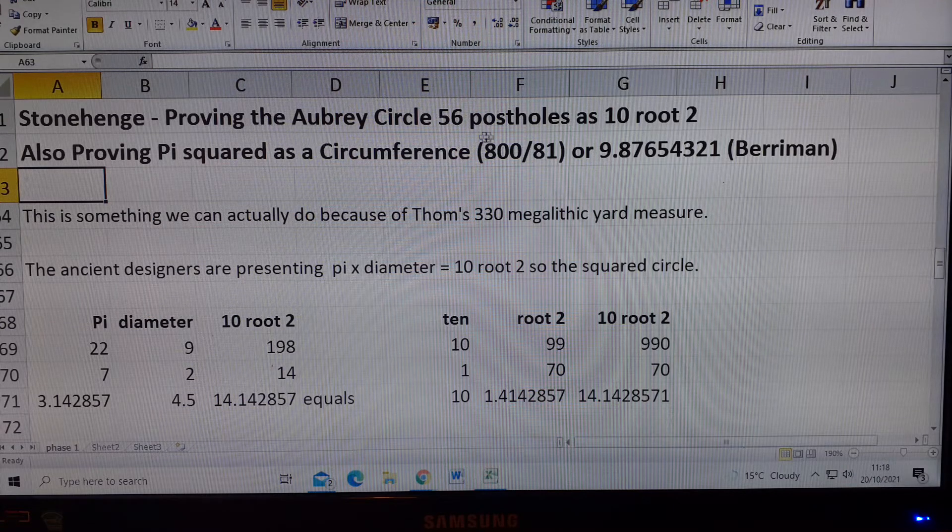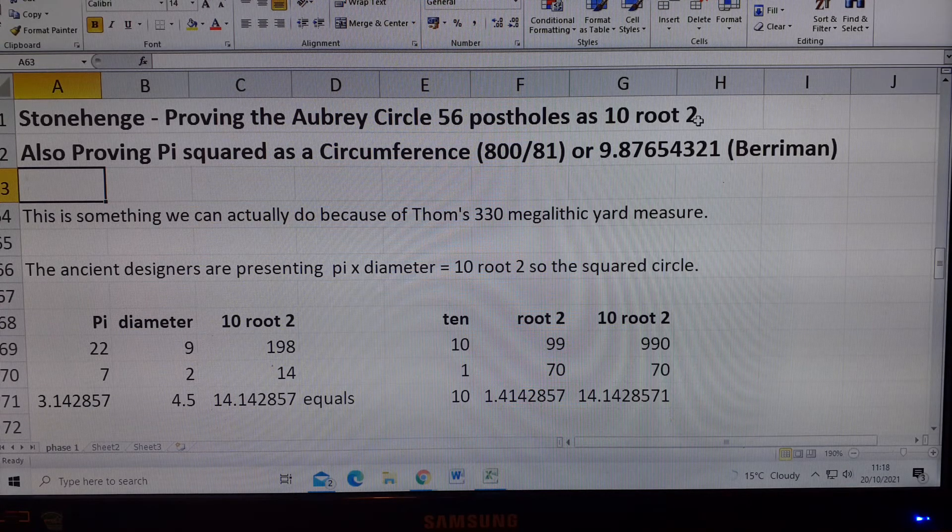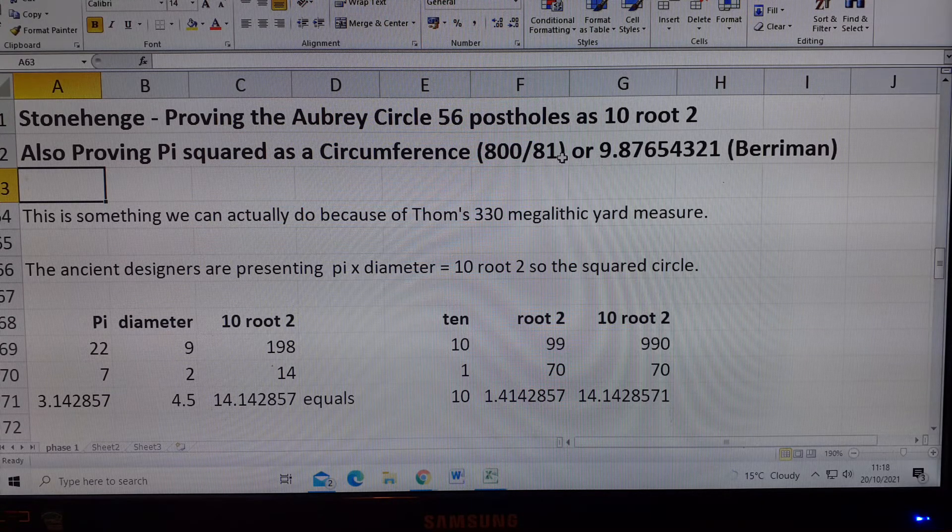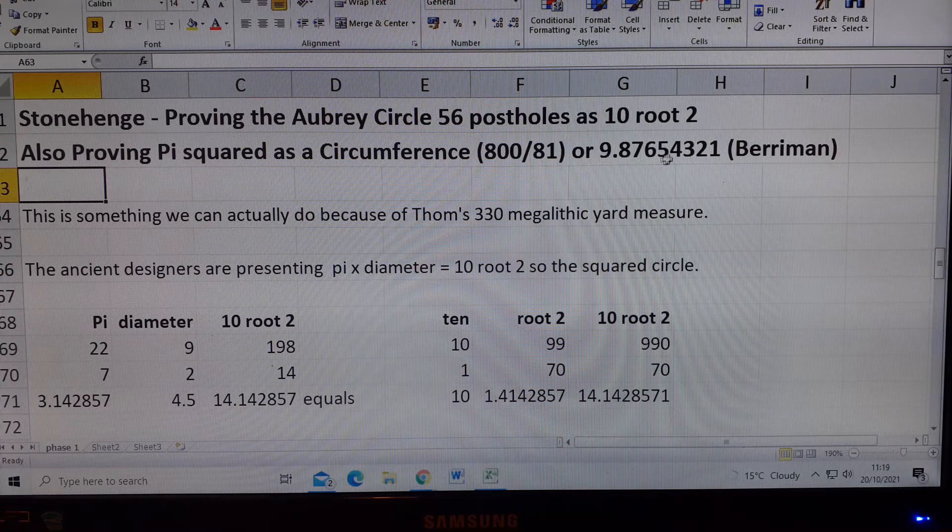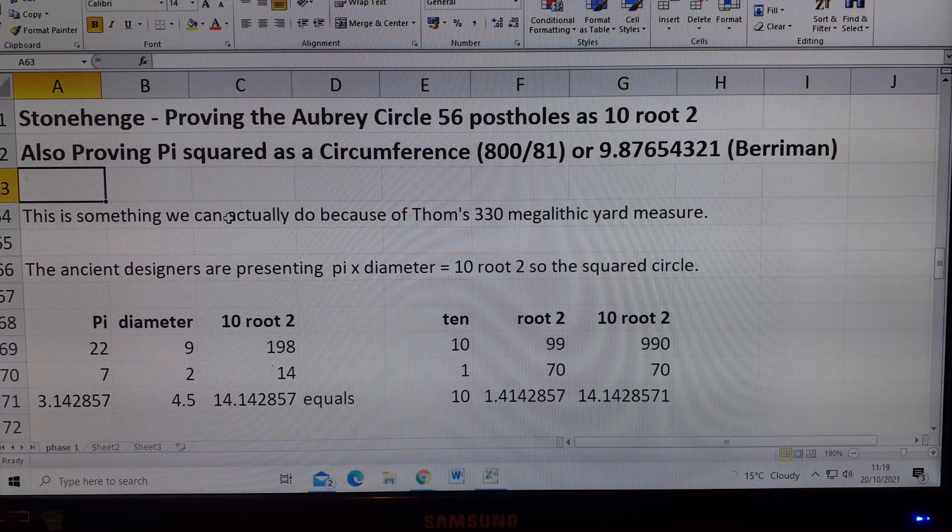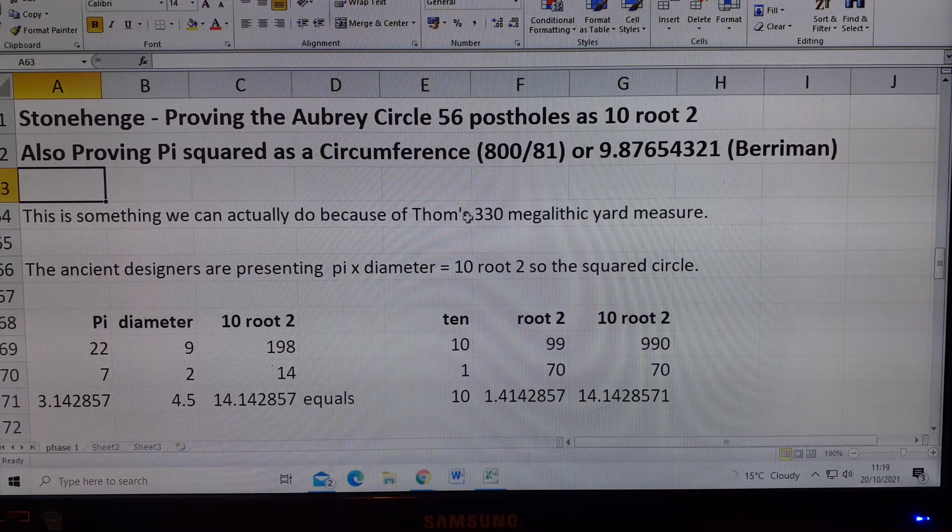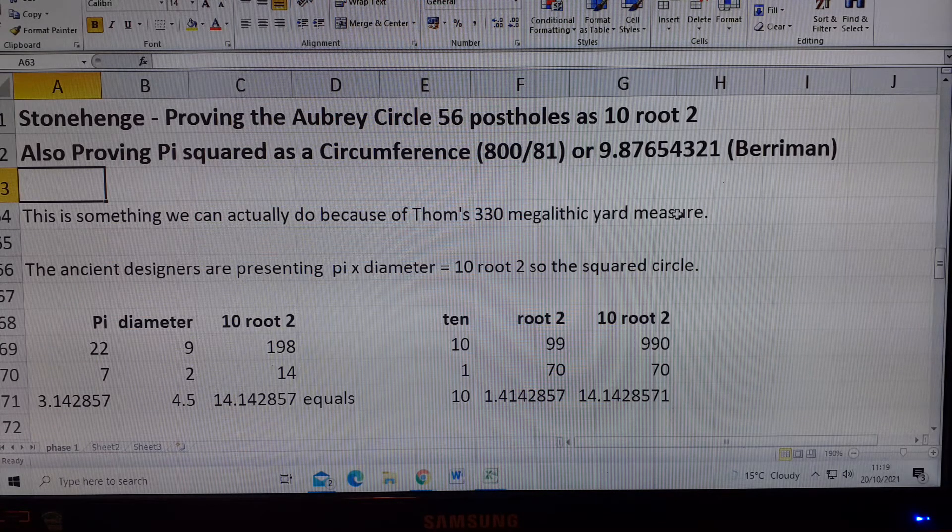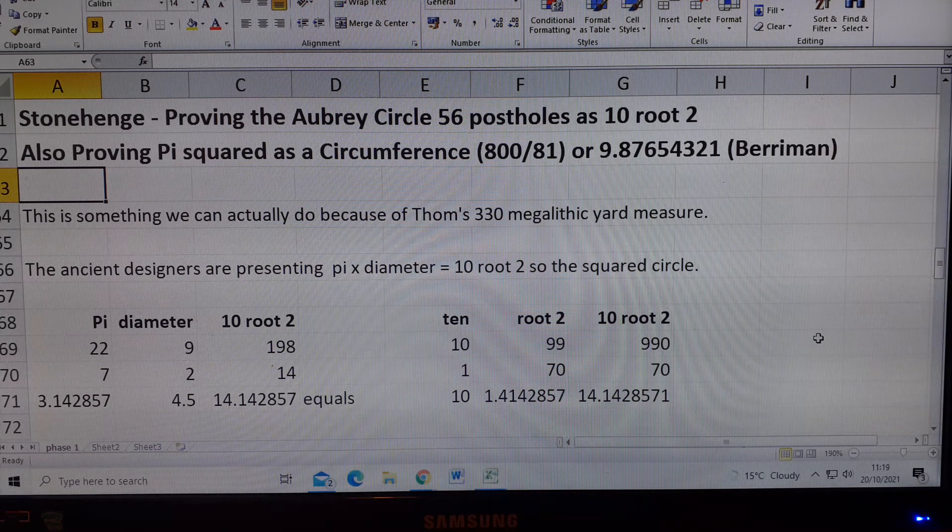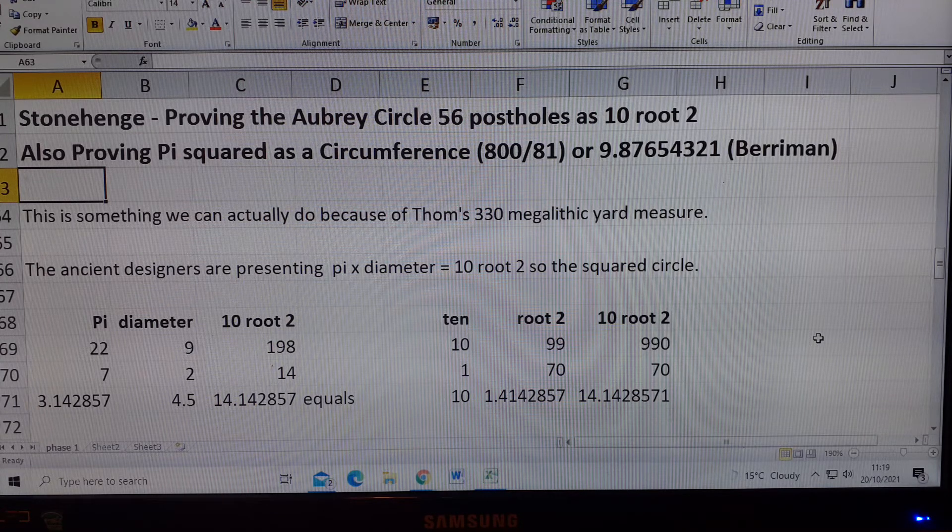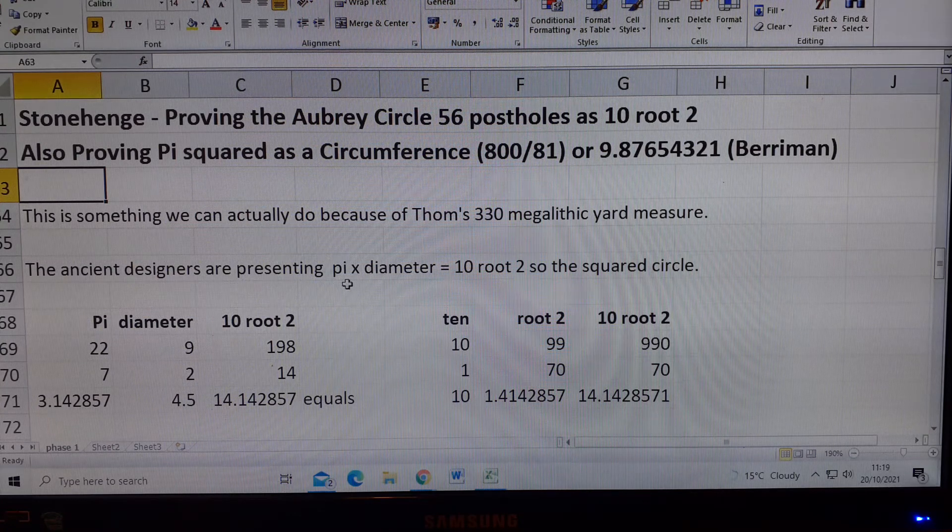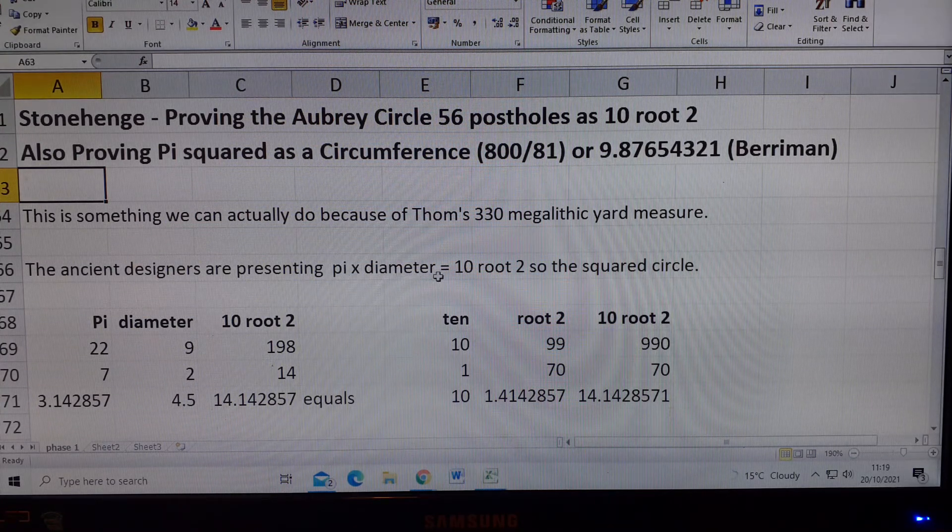We're going to go now to the presentation. Stonehenge proving the Aubrey Circle 56 post holes as 10 root 2. Also proving Pi squared as a circumference 800 over 81 or 9.87654321. That's Berryman. What I'm saying is this is something we can actually do because of Tom's 330 megalithic yard measure. We know there are 56 units in the Aubrey Circle. That's absolutely certain.